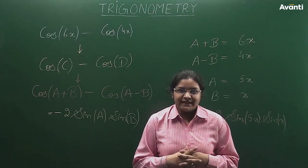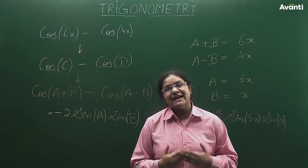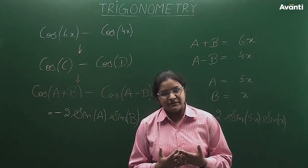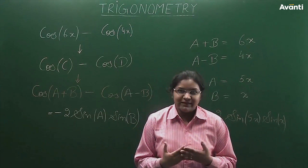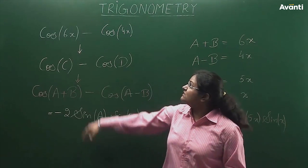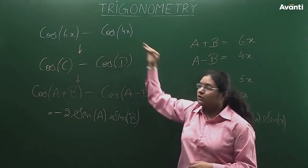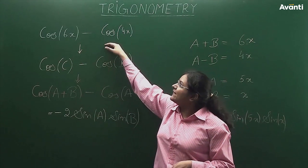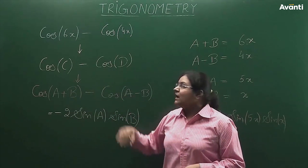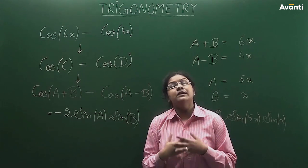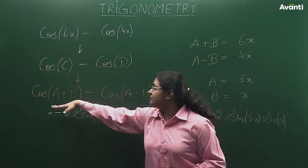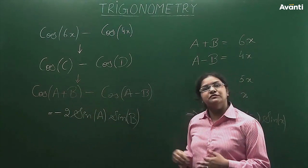Now we have seen how to write sine of c plus sine of d as a product of two trigonometric functions. Next, we will try to solve it in terms of cosine. Here we have the expression cos of 6x minus cos of 4x. If you look at it, it is of the type cos of c minus cos of d. I will try to solve it in a form I already know: cos of (a+b) minus cos of (a−b).